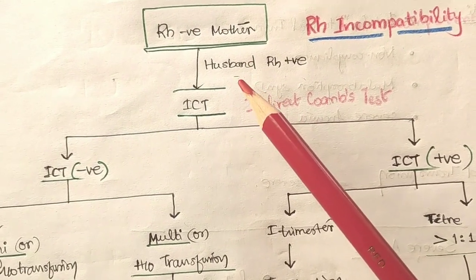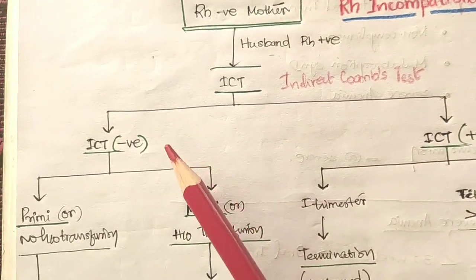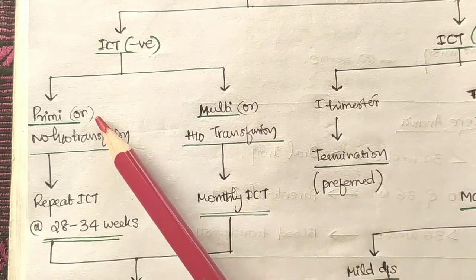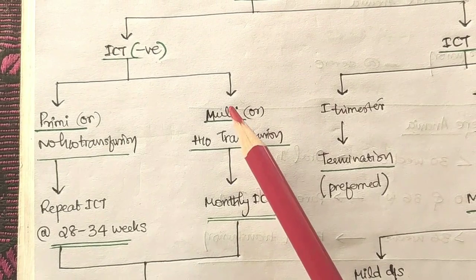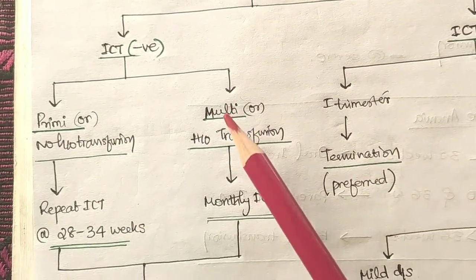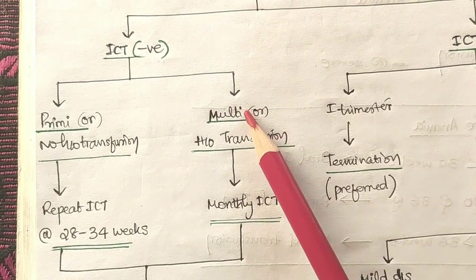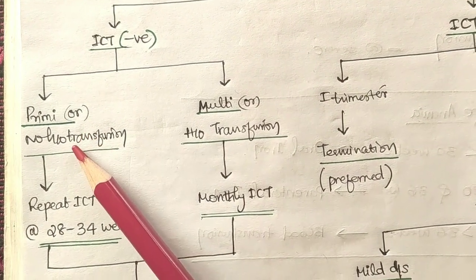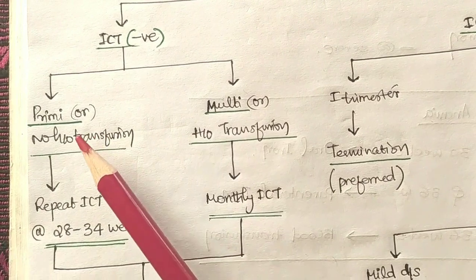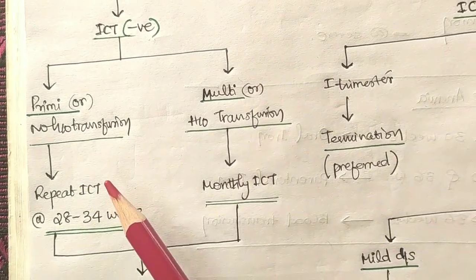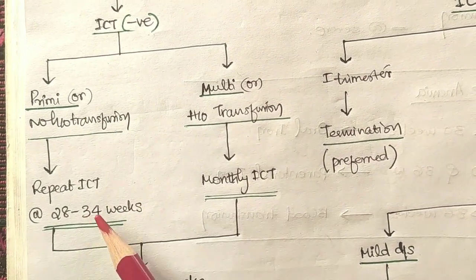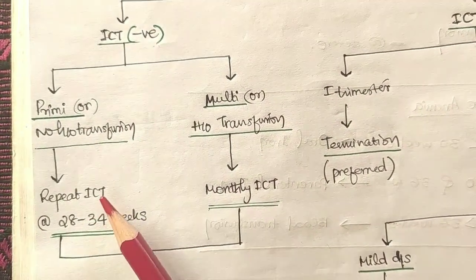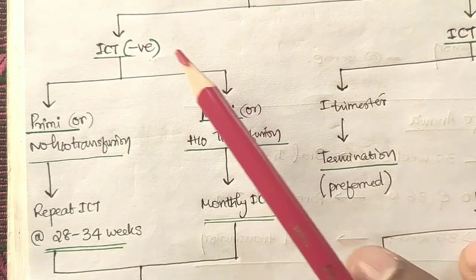We perform an indirect Coombs test (ICT). If the result is negative, we assess whether the mother is a primigravida or multigravida — that is, whether she has given birth before or is pregnant for the first time. If she is primigravida with no history of blood transfusion, we repeat the indirect Coombs test at 28 to 34 weeks of gestation.